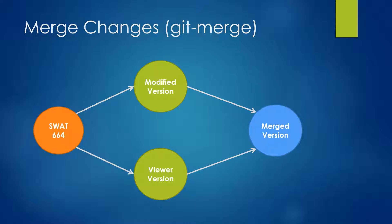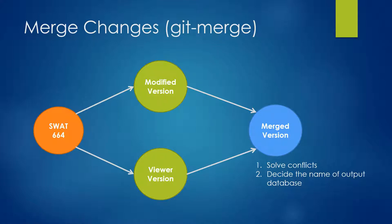After you merge this change, you will have the merged version. In this merged version, you will have both the changes from your own modified version and from the Viewer version. That's the version you will use to generate the EXE files. In the process, you may find you have some conflicts. A conflict means you have made a change to the same code in both the modified version and the Viewer version, so you need to decide which one to keep and which one to remove — you need to tell the GIT merge command which is the correct one. The second thing is you need to give a name to the output database in the Viewer version.